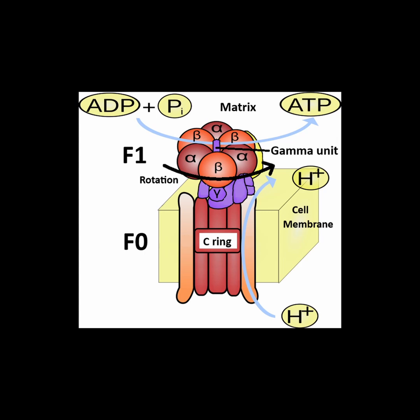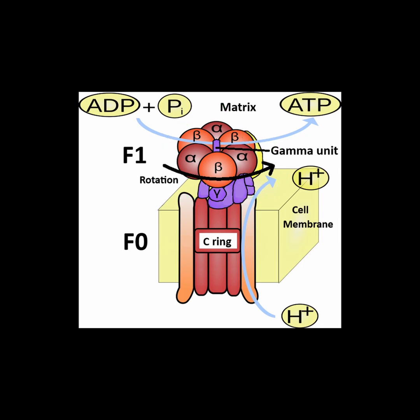The gamma unit is able to conduct full 360-degree turns as it operates. For each full turn, three ATP molecules can be created, each one being formed from one of three ATP-making sites.